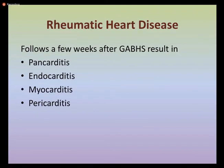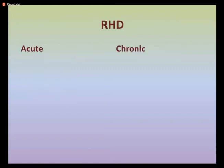Coming to rheumatic heart disease: after pharyngitis by group A beta-hemolytic streptococcal, it may result in pancarditis — where all layers of the heart are involved — or it may cause endocarditis alone, myocarditis, or pericarditis. There are two types of clinical manifestation in rheumatic heart disease: the acute form and the chronic form.